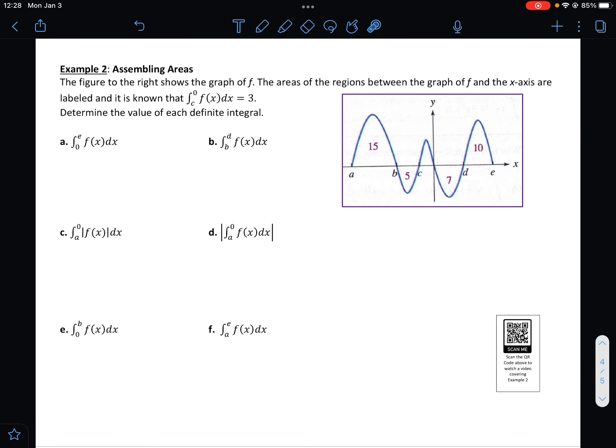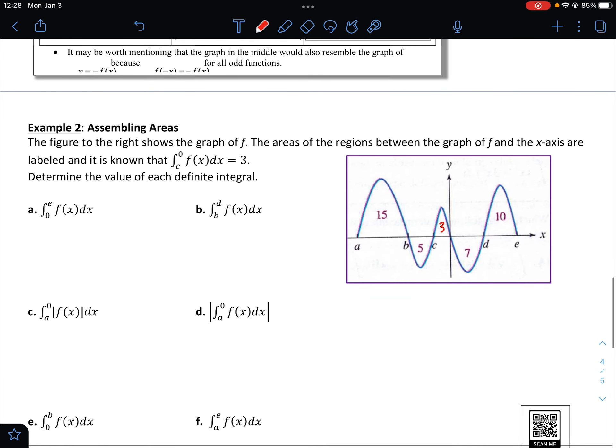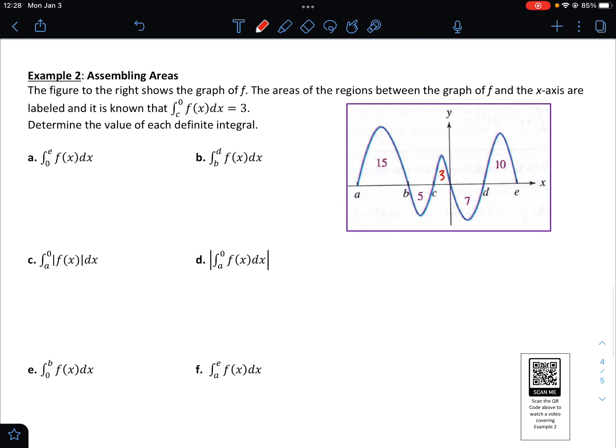Example two says assembling areas. We have this beautiful picture here of f. We know this is 15, this is 5, this is 7, this is 10, and thanks to this right here, we know that this is 3 from c to 0. And we're asked to answer these six questions to the left here. All right, so from 0 to e, immediately some people are going to think that's 17, 7 plus 10. But that would be incorrect. Remember, the 7 is below the axis, so it's negative. So it's going to be negative 7 plus 10, or 3.